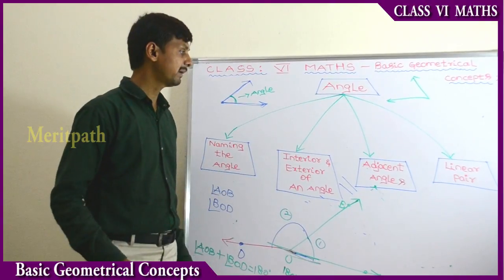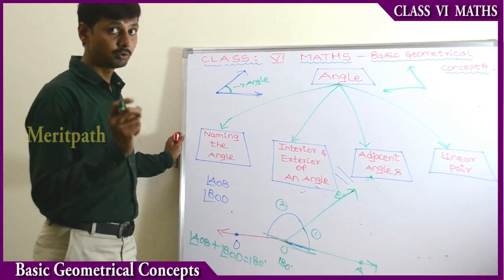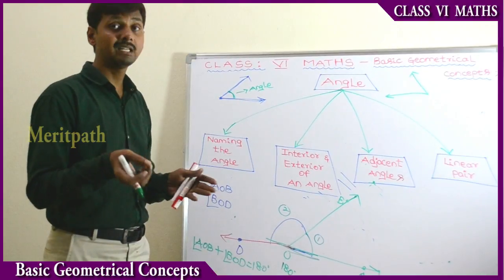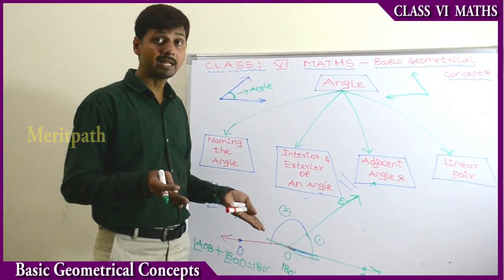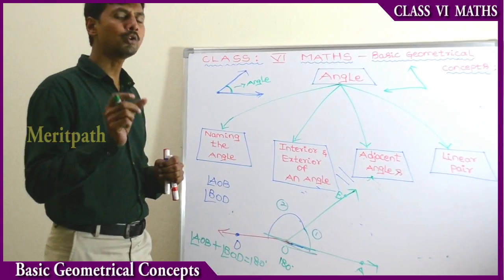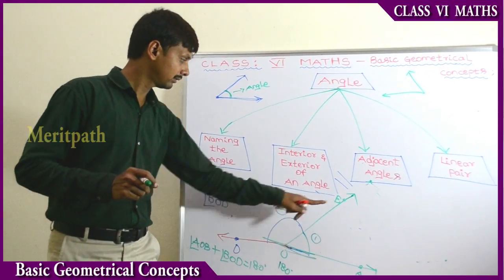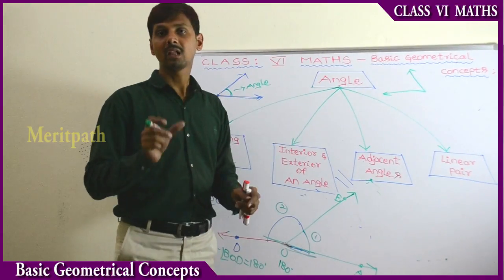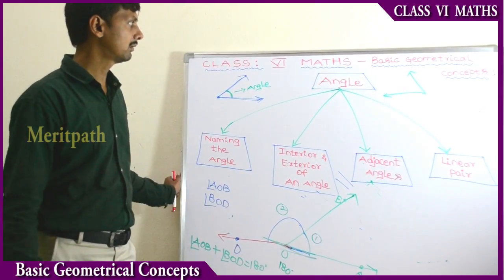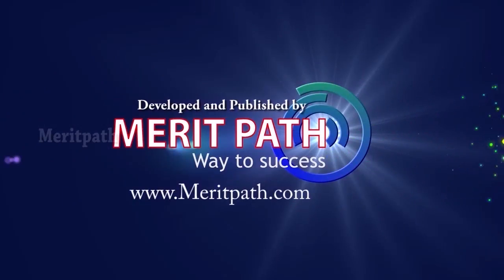So when we add these two adjacent angles — angle AOP plus angle BOD — it equals 180 degrees. Two adjacent angles that add up to 180 degrees we call a linear pair. So up to now we have discussed: the definition of an angle using two rays, how to name angles, interior and exterior of an angle, adjacent angles having a common vertex and common arm, and linear pair — adjacent angles equal to 180 degrees.